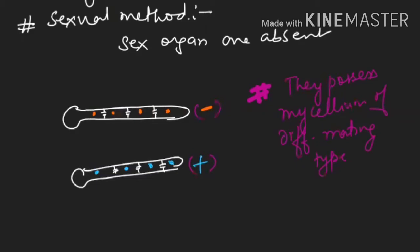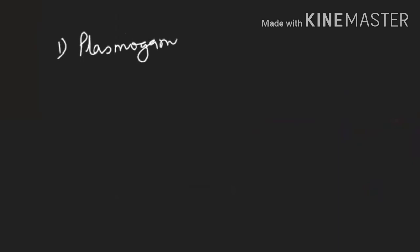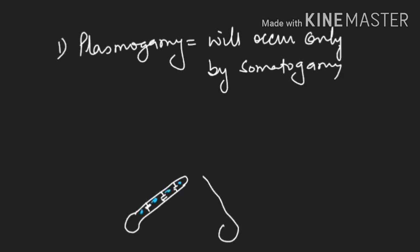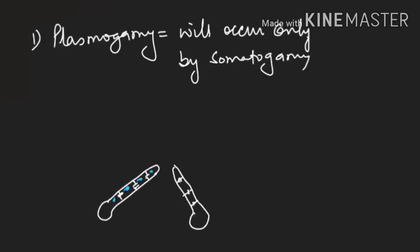Plasmogamy in Basidiomycetes occurs only by somatogamy method. Sexual reproduction has three steps: plasmogamy, karyogamy, and meiosis. The first step, plasmogamy, will occur only by somatogamy. One mycelium is the plus strain and another mycelium comes in contact as the minus strain. The two mycelium come in contact, and one plus nucleus and one minus nucleus — two different color nuclei — will be there.